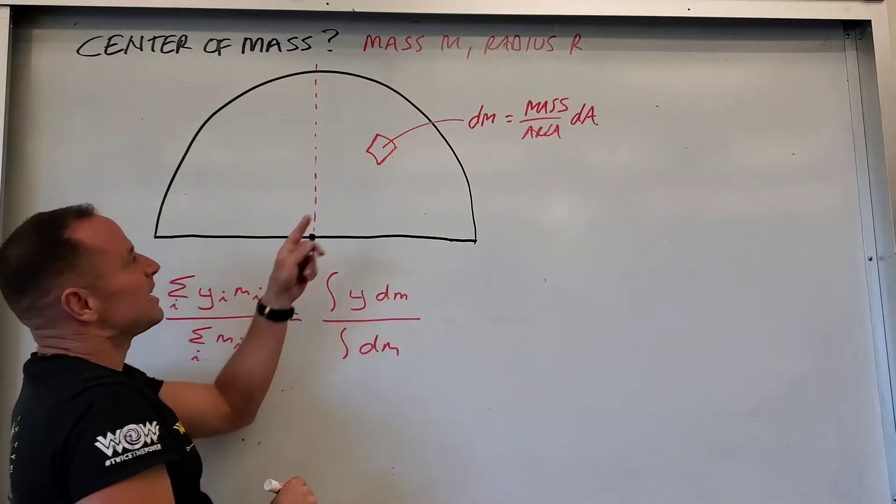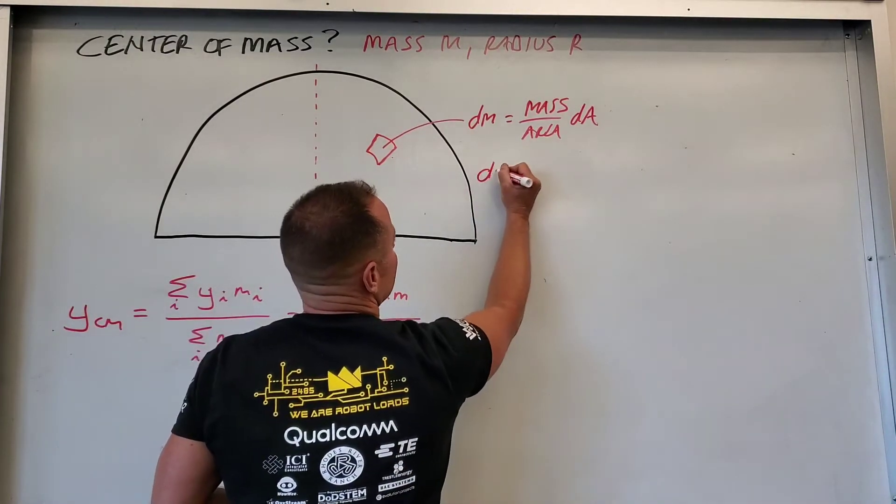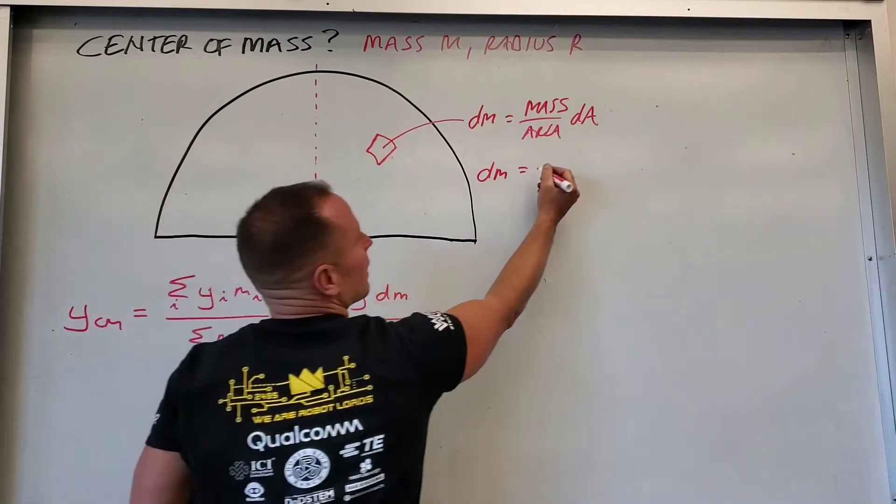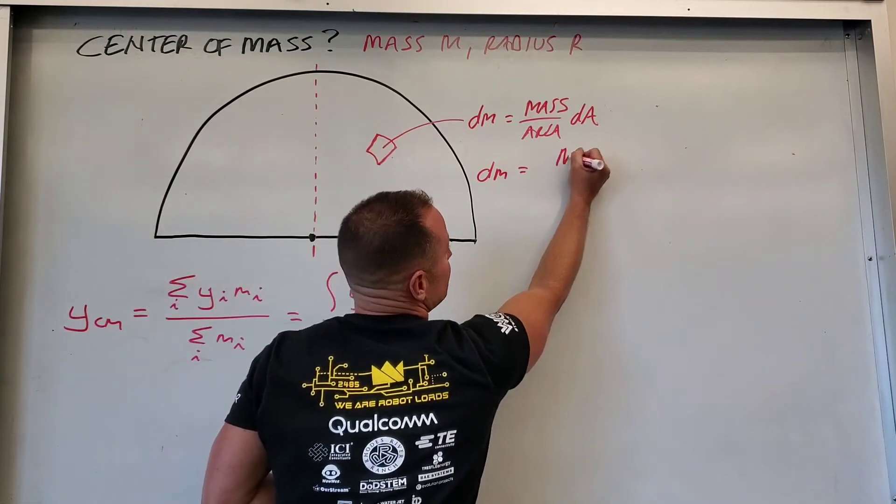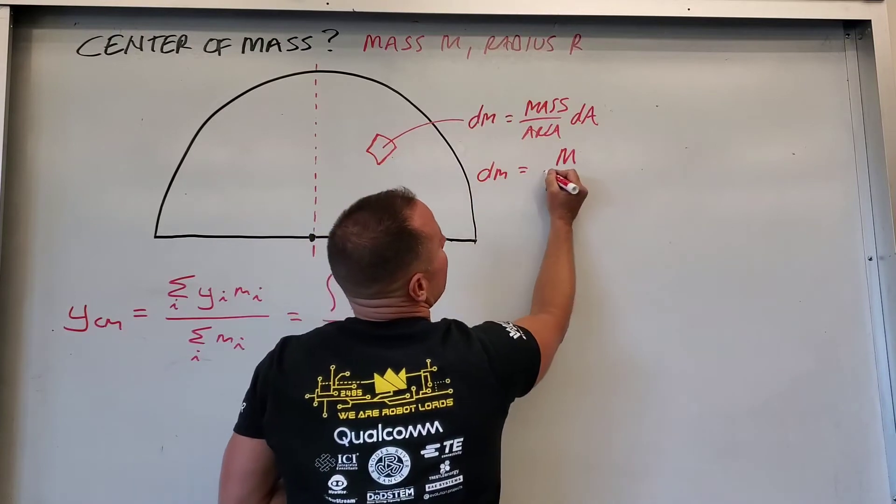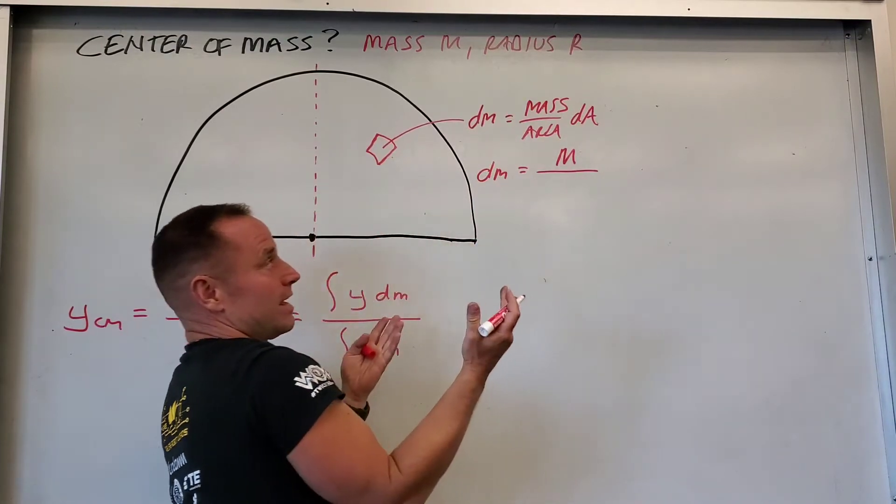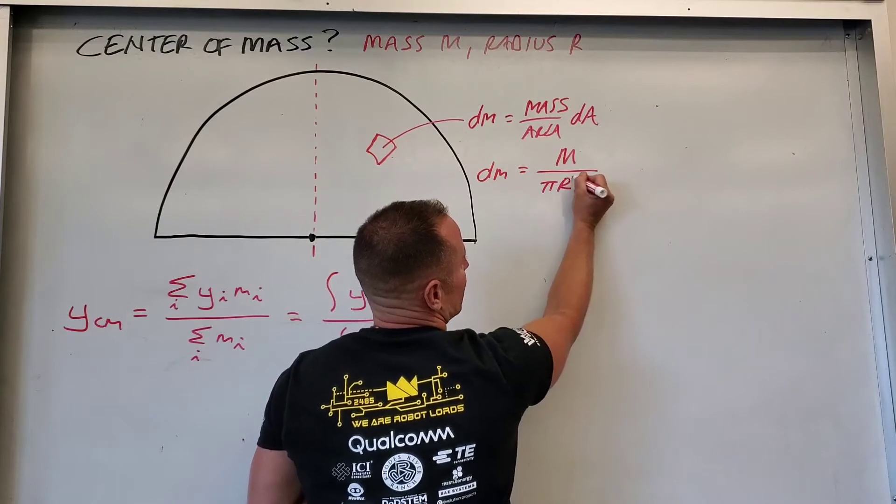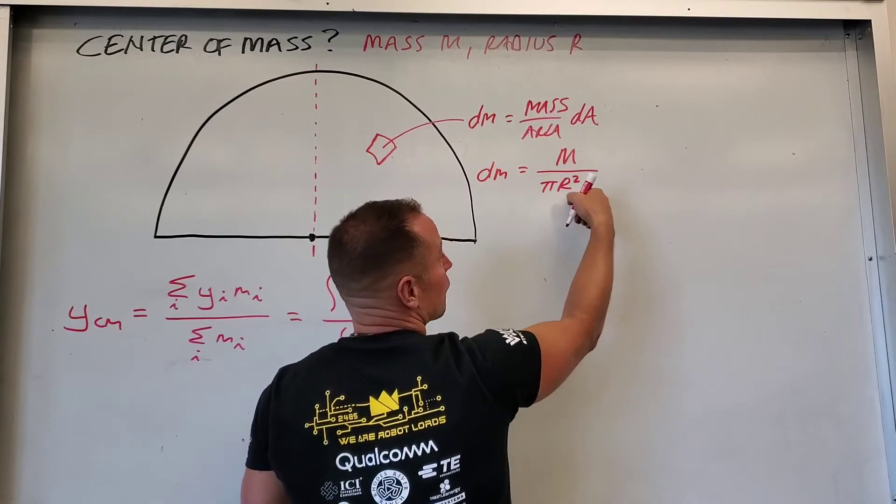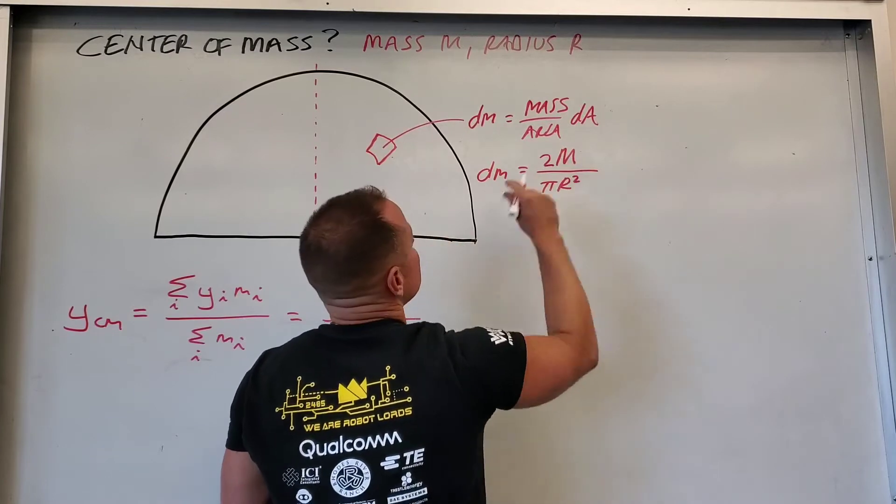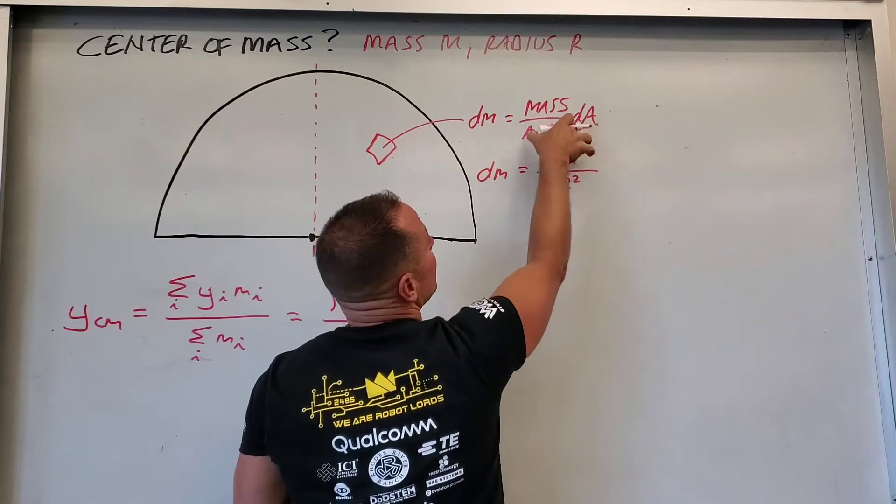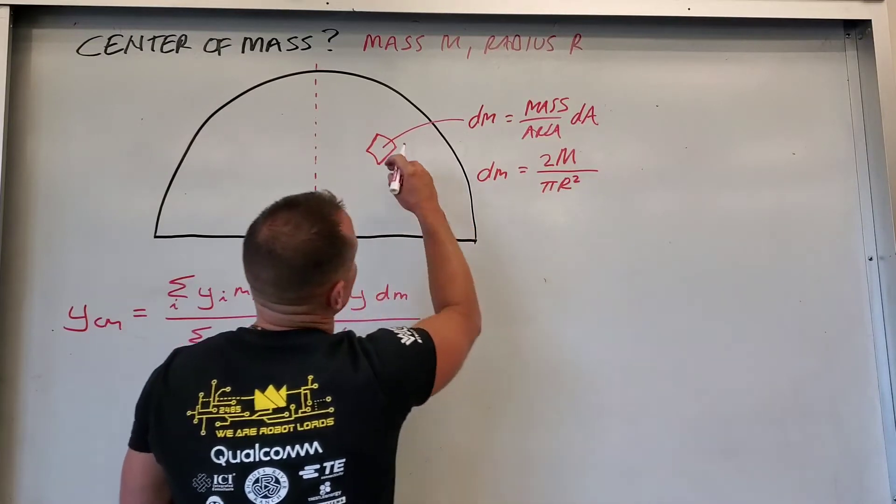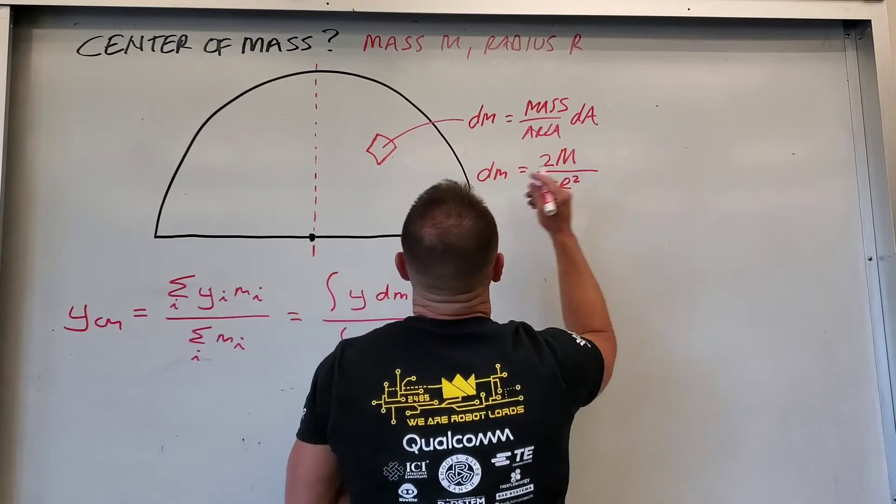If we play around with this a little bit more, the mass per area of this plate is, well, the mass is m and the area is half of the area of a circle, so it's half of π r squared. So we need to divide by π r squared over 2, which would actually bring the 2 up here. So this part, this is your mass per area, and then we need to multiply by the area dA.